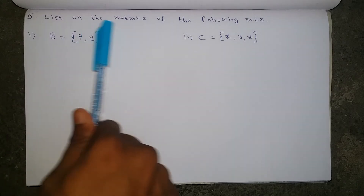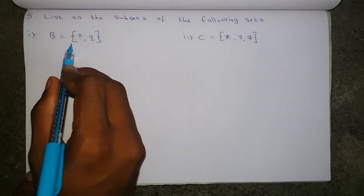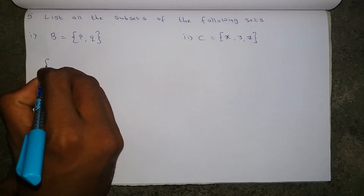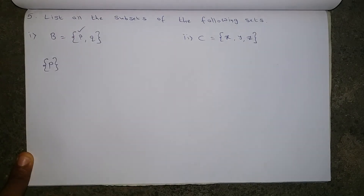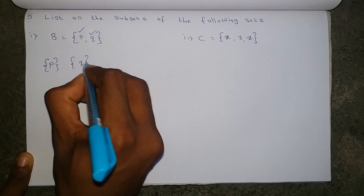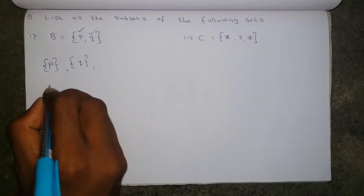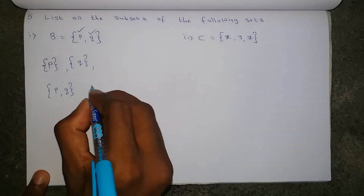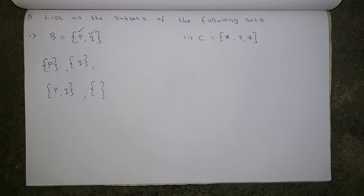List all the subsets of the following sets. First, set B equals {P, Q}. Start by writing single elements: {P} and {Q}. Then write both elements together: {P, Q}. Also include the empty set. These are all the subsets of the given set.